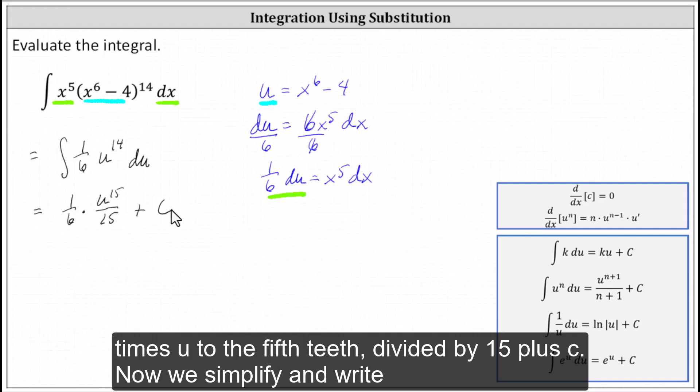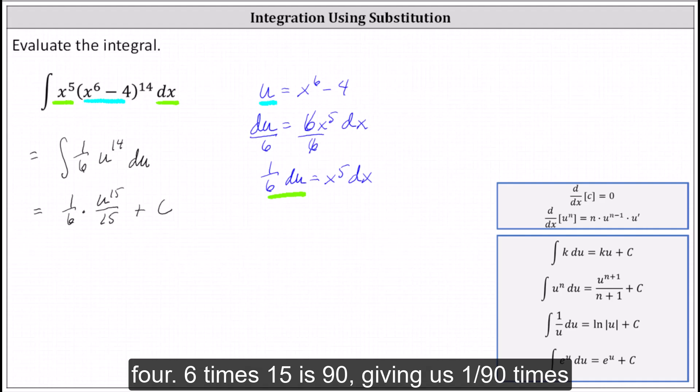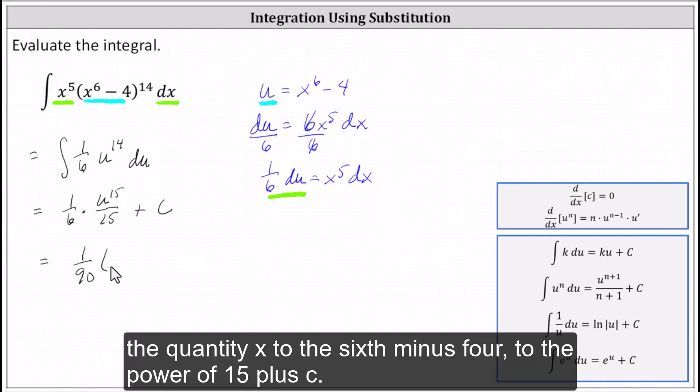Now we simplify and write the anti-derivative back in terms of x by replacing u with x to the sixth minus four. Six times 15 is 90, giving us one-ninetieth times the quantity x to the sixth minus four to the power of 15 plus c.